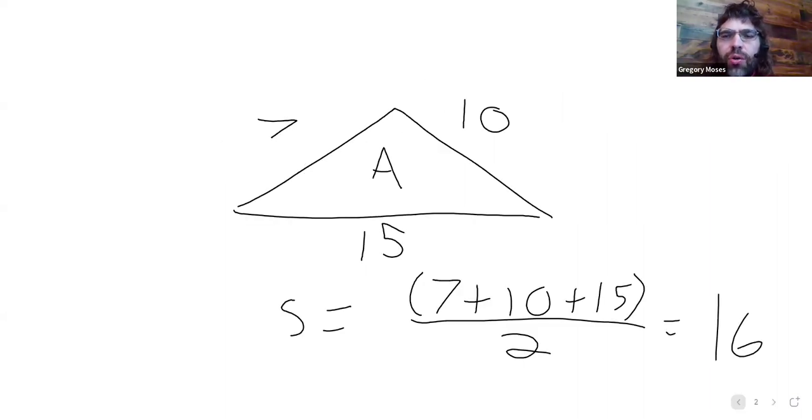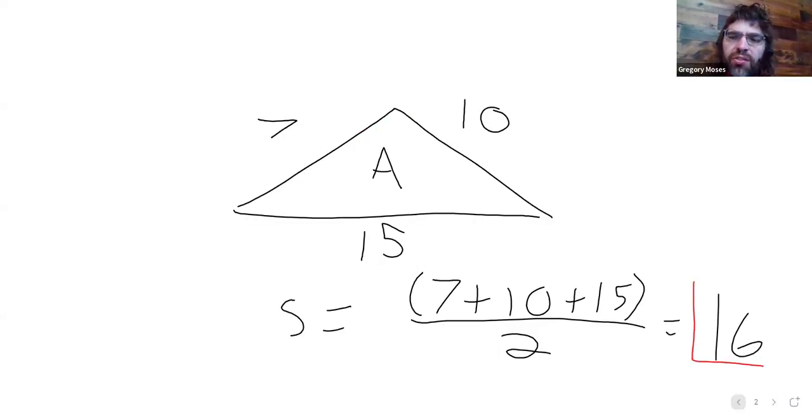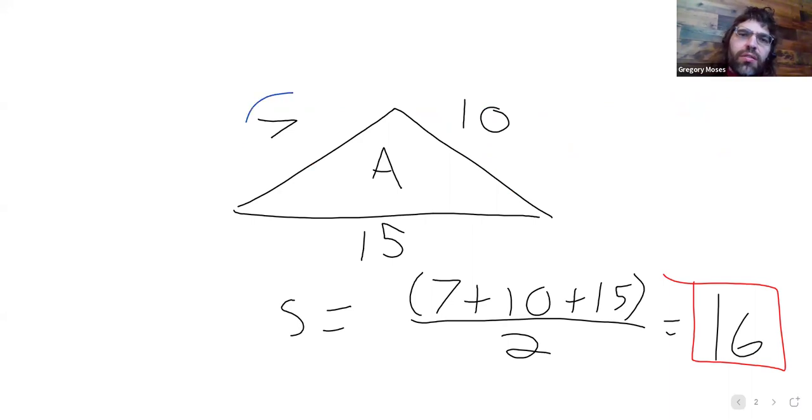And again, just so we're on the same page, if you look at the numbers inside the square root, this 16 that keeps showing up is the semi-perimeter. And then you see this 7 and this 10 and this 15, and those are the sides of the triangle.